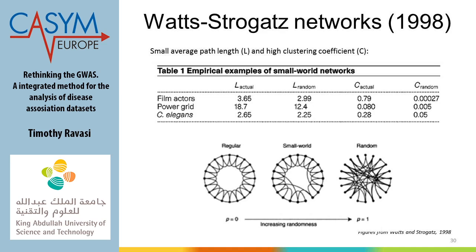They studied three real networks: the Kevin Bacon network, the US power grid, and the C. elegans protein-protein interaction network. Comparing these to a random network, they noticed that all these real networks are characterized by a small average path length — you can go from one place to another very fast, the six degrees of separation — and a high clustering coefficient. That is the small-world property.